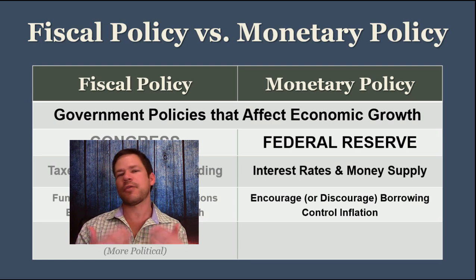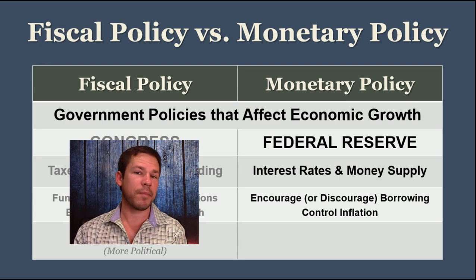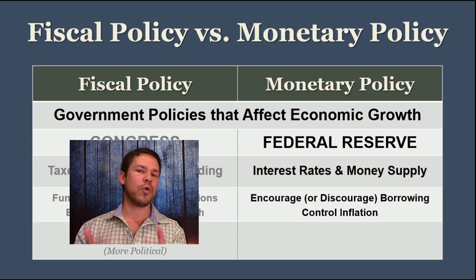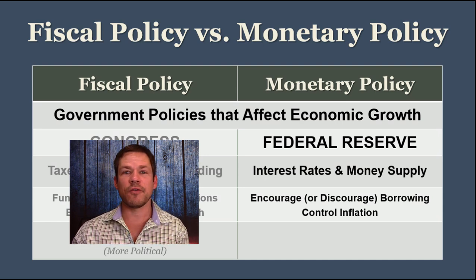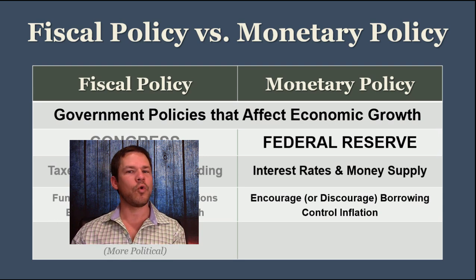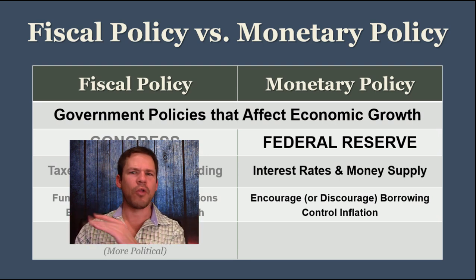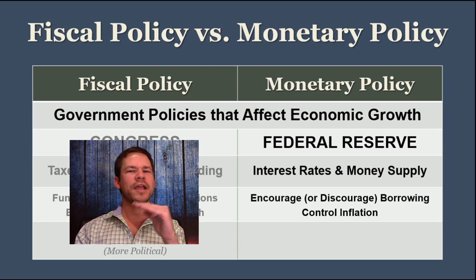There are situations where the Fed wants to encourage borrowing because that's when people are investing and starting businesses, helping economic growth. But then again, if there's too much borrowing — too much consumer spending and people getting into debt — you might want to cool that off. Maybe there's a bubble on the horizon; everybody's investing in this or that and the Fed's concerned things are heating up too much. You don't want unchecked economic growth over a long period of time — it's unsustainable. So what the Fed is trying to do is keep economic growth at a somewhat even pace.